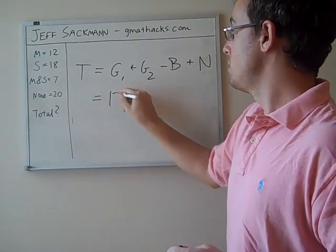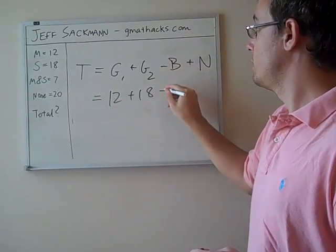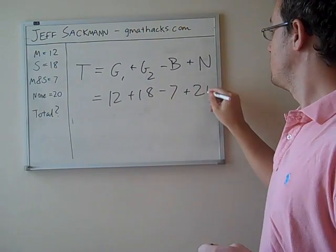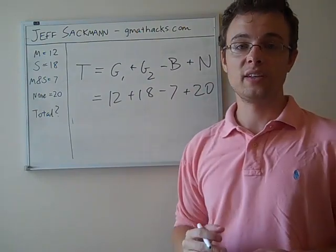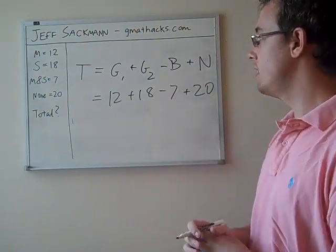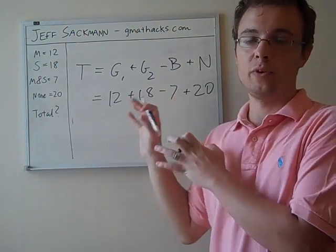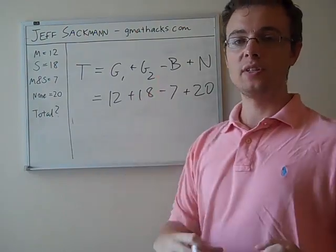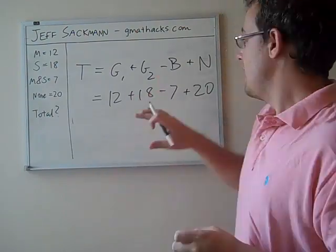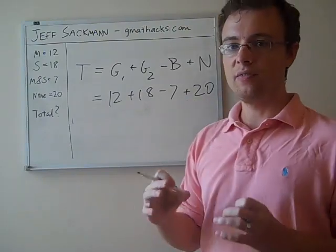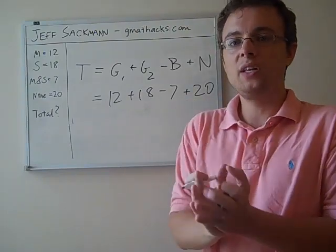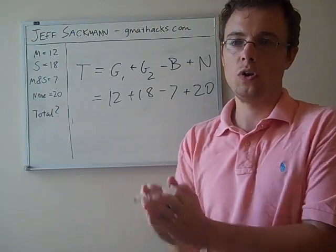So, in this case, the math is very straightforward, 12 plus 18 minus 7 plus 20. Hopefully, that gets us back to 43 again, and it does. And the only difference here between what we're looking at and what we just did with the Venn diagram is how we're dealing with this 7.